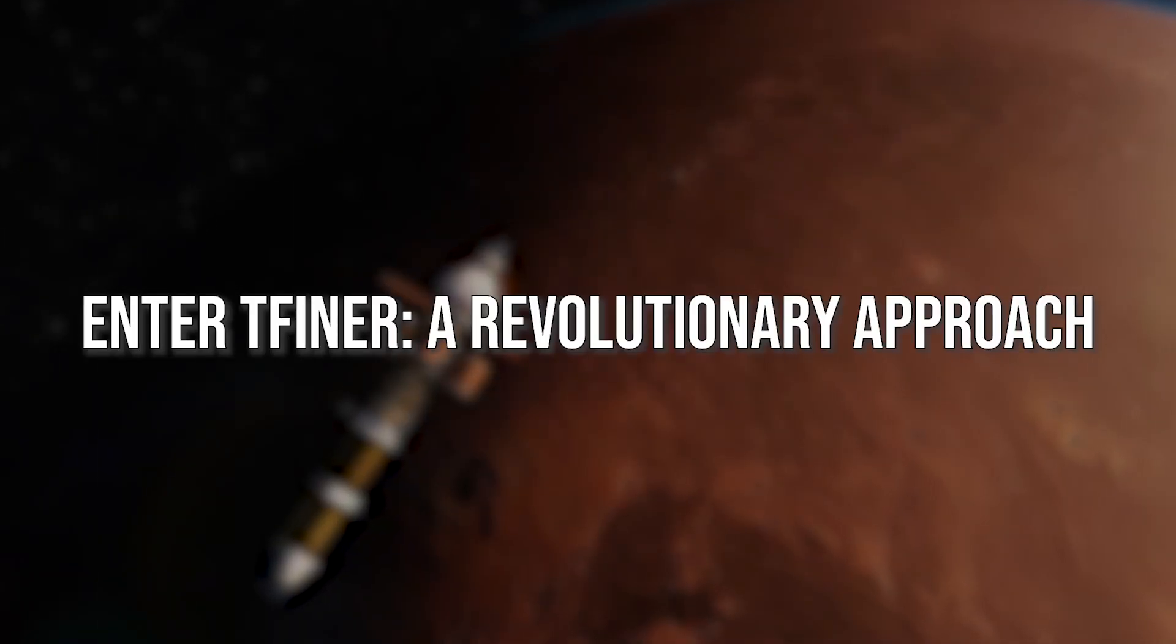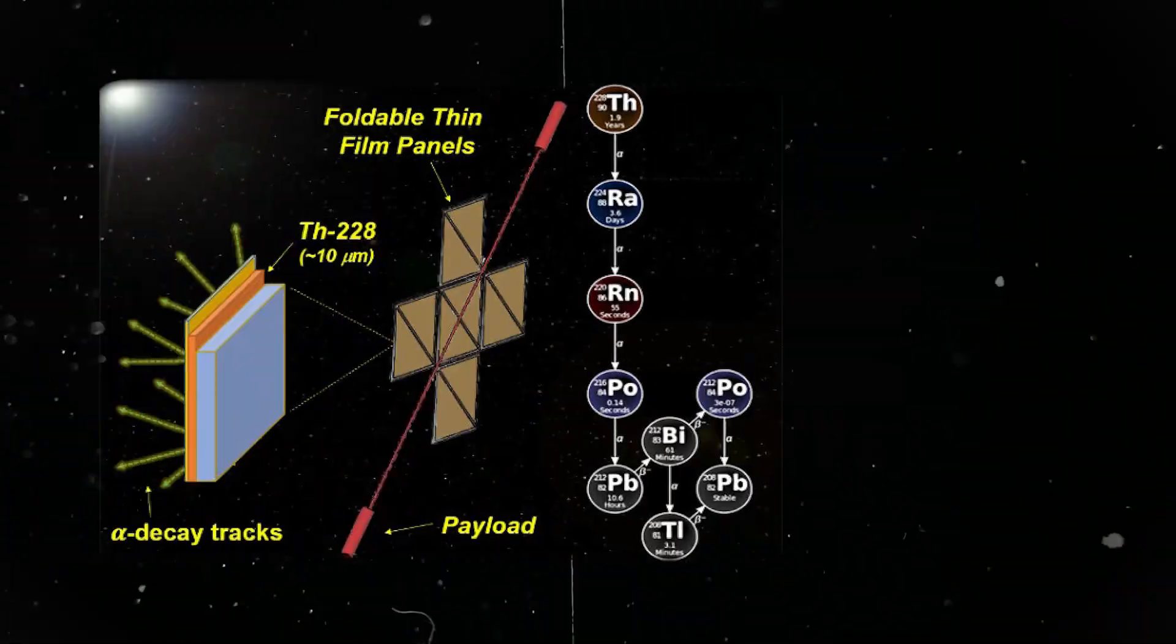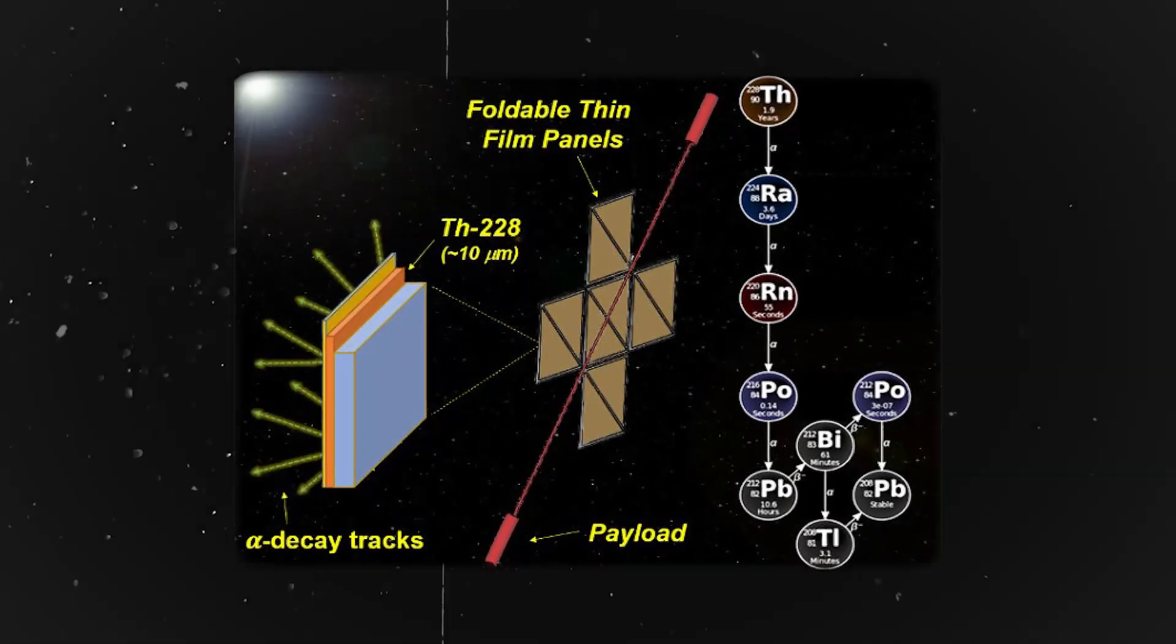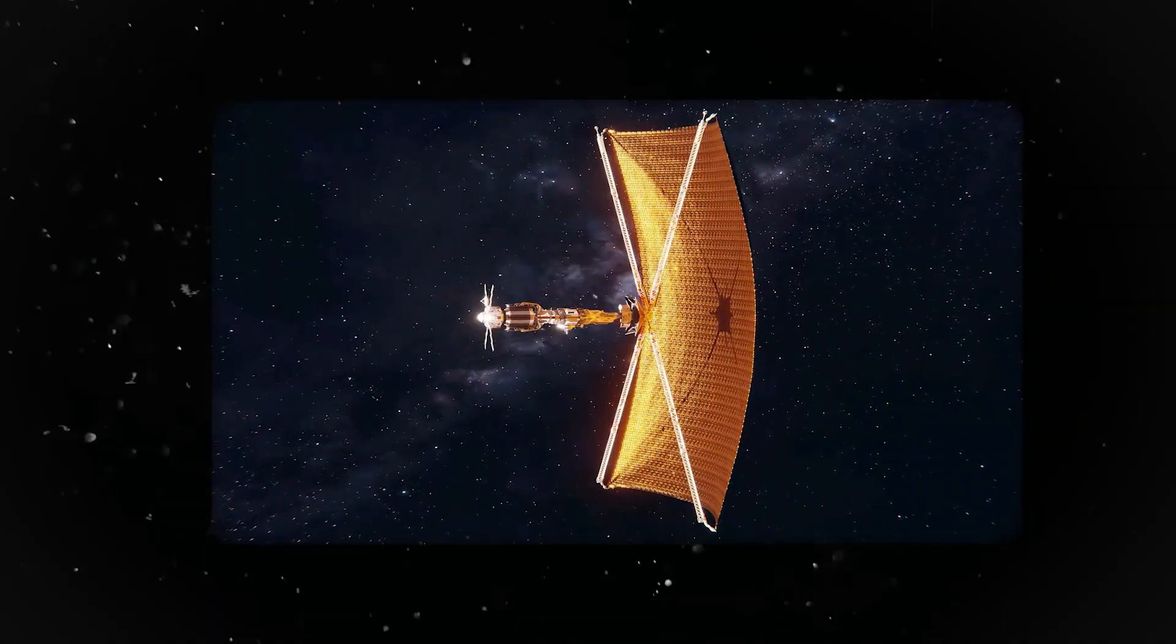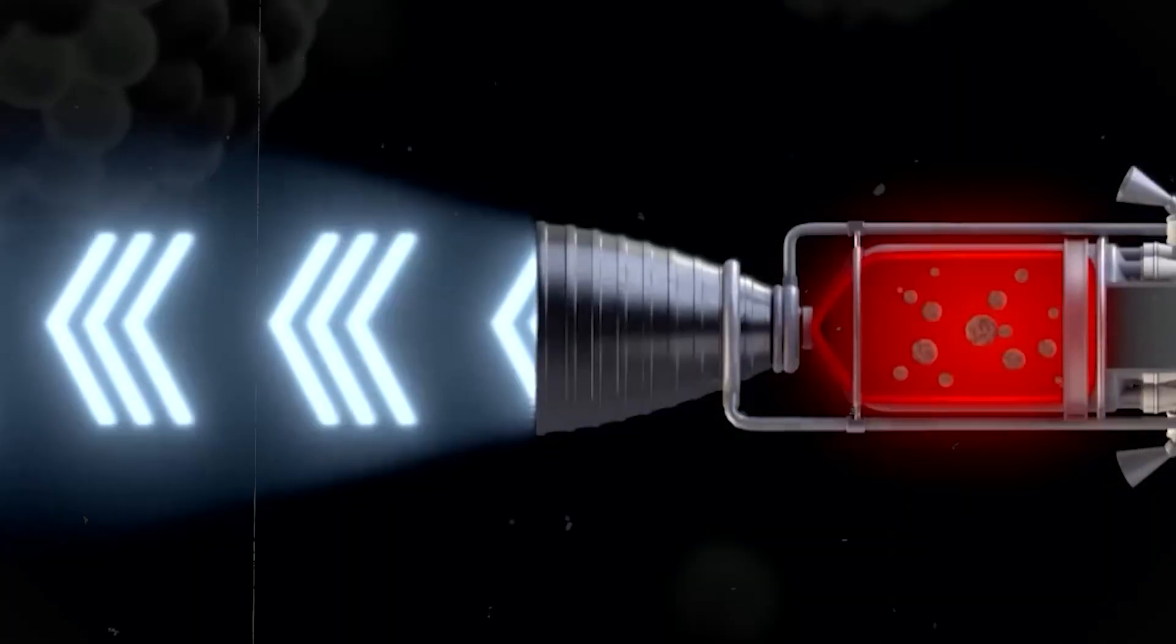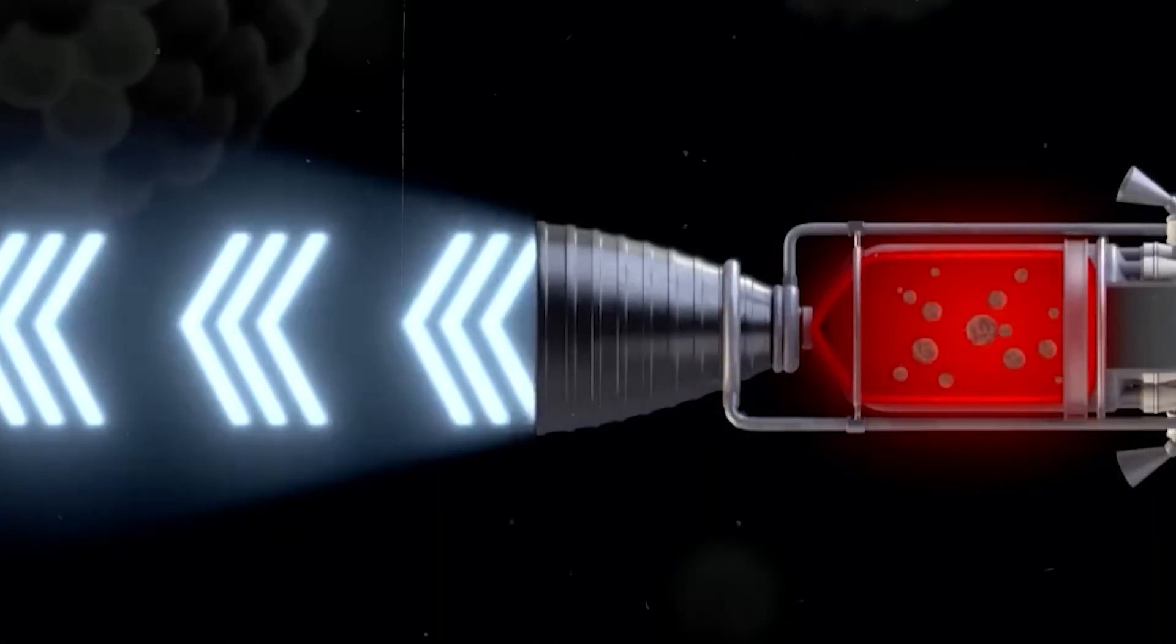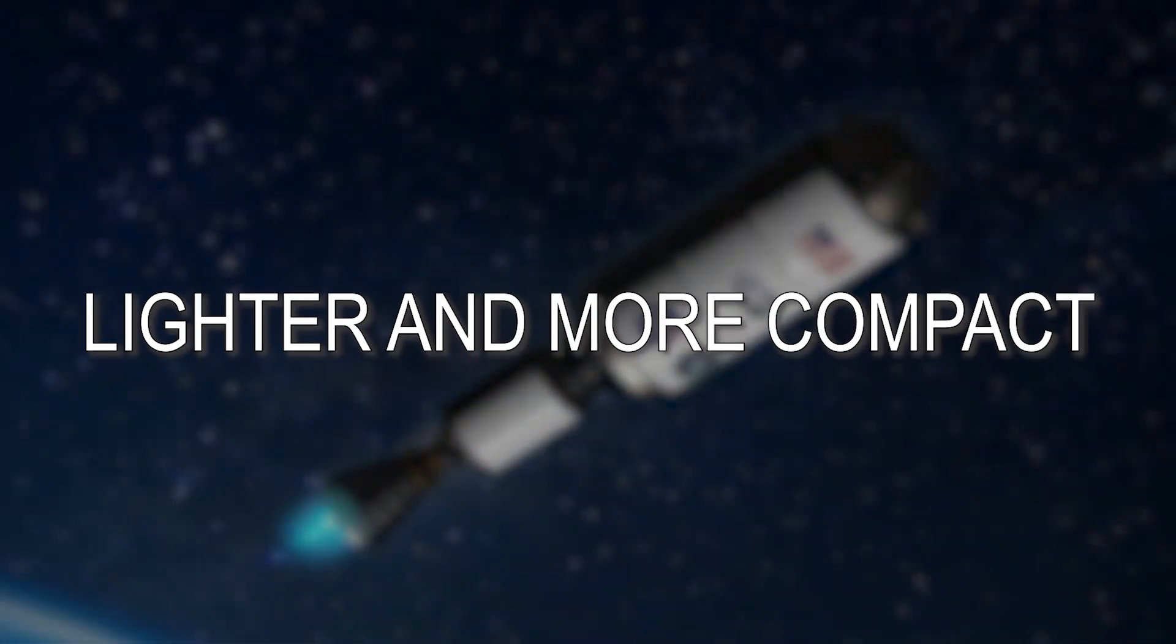Enter T-Finer, a revolutionary approach. Unlike conventional nuclear rockets that use reactors and heavy shielding, T-Finer takes a radical, lightweight approach. Imagine thin sheets of radioactive material similar to a solar sail, but instead of relying on sunlight, they utilize the momentum of ejected decay products for thrust. This innovative design boasts several advantages: lighter and more compact.